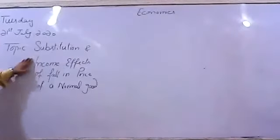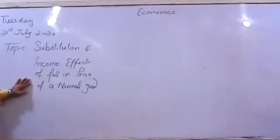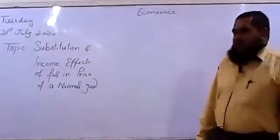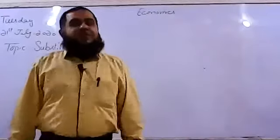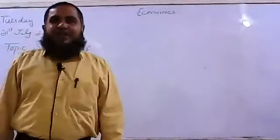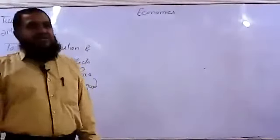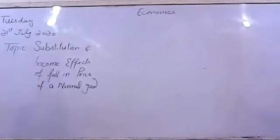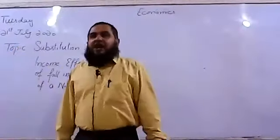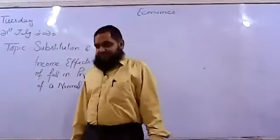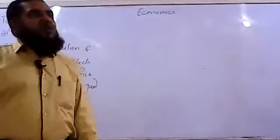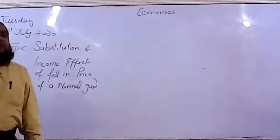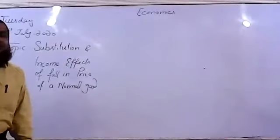We are having a lesson on substitution and income effects of a fall in the price of a normal good. In our last lesson we talked about consumer equilibrium, where the budget line makes a tangency condition with the highest attainable indifference curve. We also studied the income consumption curve — how the consumer changes consumption of a normal good and an inferior good when income increases.